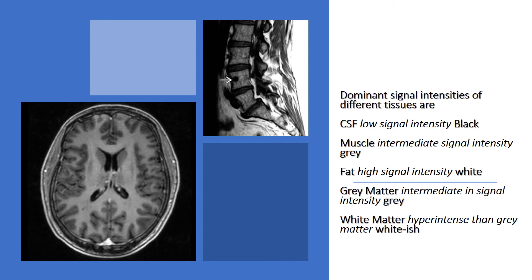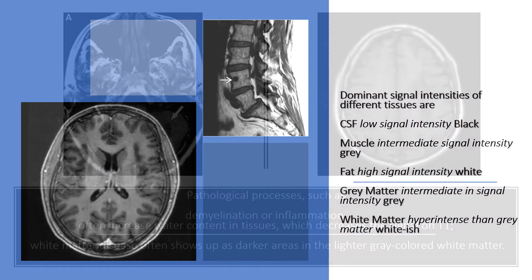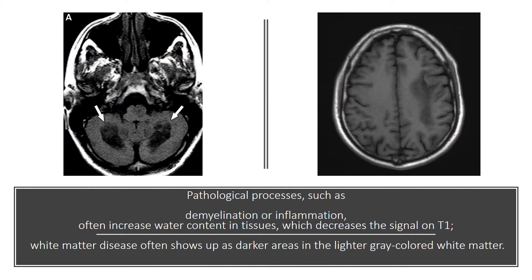White matter is hyperintense compared to gray matter, appearing whitish in color. Pathological processes such as demyelination or inflammation often increase water content in tissues, which decreases the signal on T1. White matter disease often shows up as darker areas in the lighter gray colored white matter.